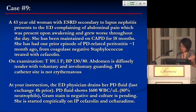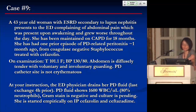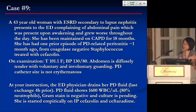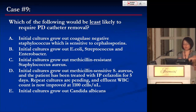Case nine: a 43-year-old woman with end-stage renal disease secondary to lupus, on CAPD for 18 months, presents with worsening abdominal pain. She had one prior episode of PD-related peritonitis about a month ago from coagulase-negative staph treated with cefazolin. On exam, temp is 101.1°F, blood pressure 130 over 80. Her abdomen is diffusely tender with voluntary and involuntary guarding. PD catheter site doesn't appear erythematous. PD fluid drained, last exchanged four hours prior, shows 1,600 WBCs per microliter, 80% neutrophils. Gram stain is negative. She is started empirically on IP cefazolin and ceftazidime. Which is least likely to require PD catheter removal?